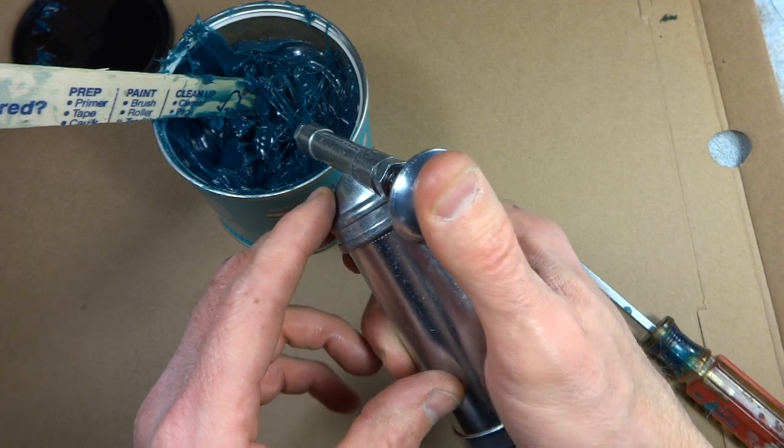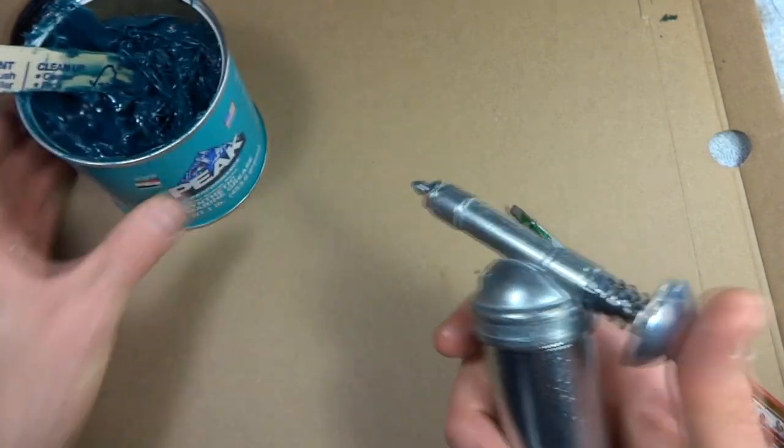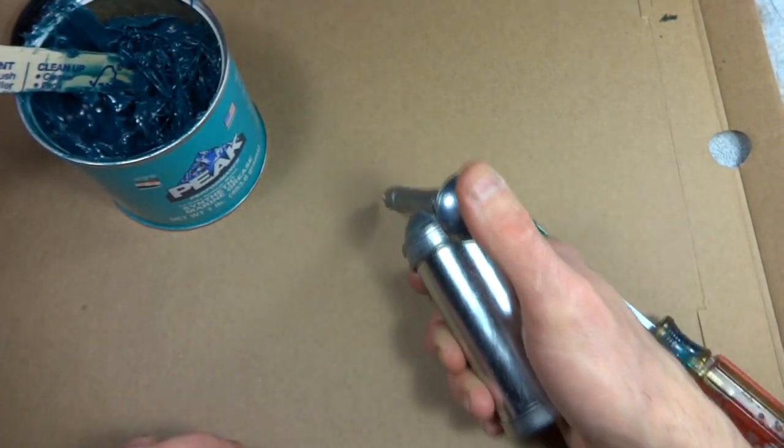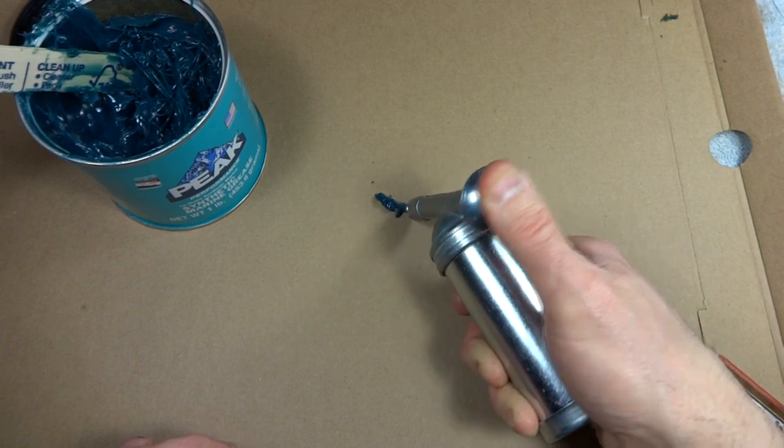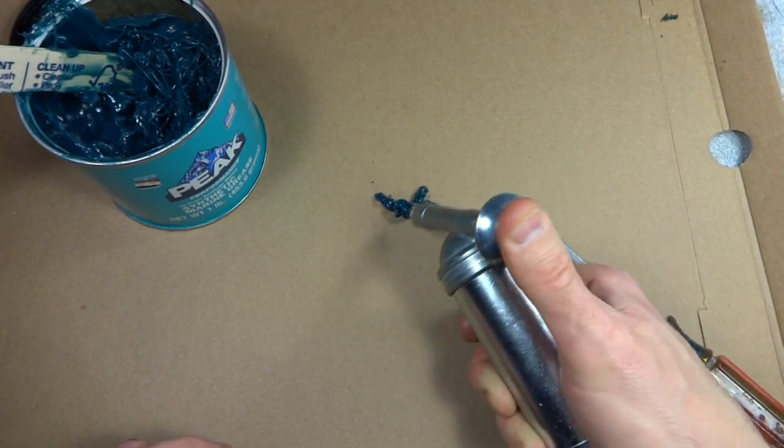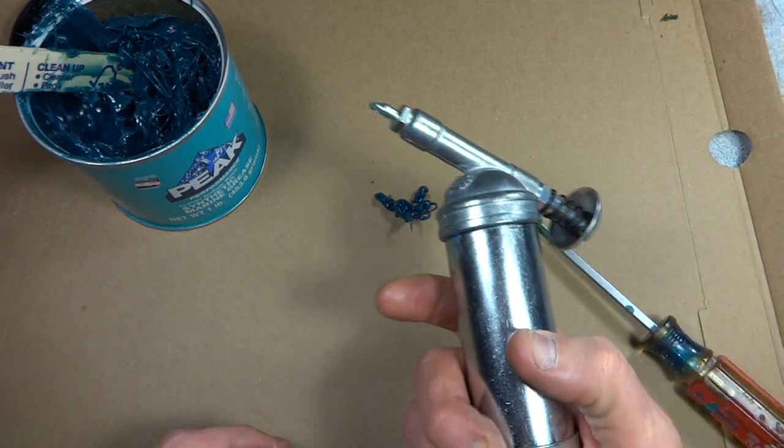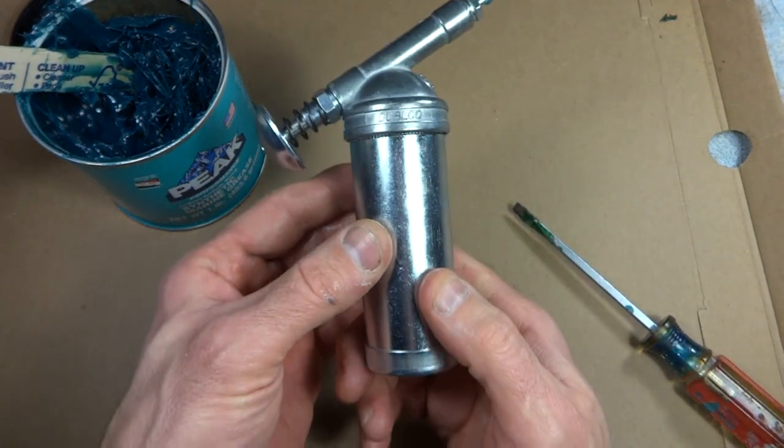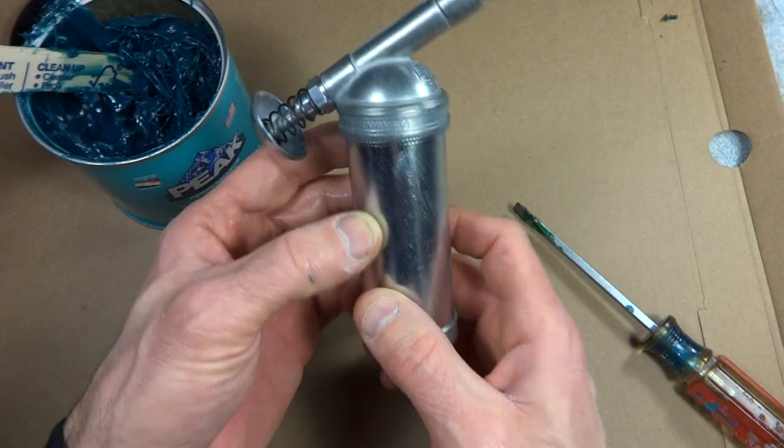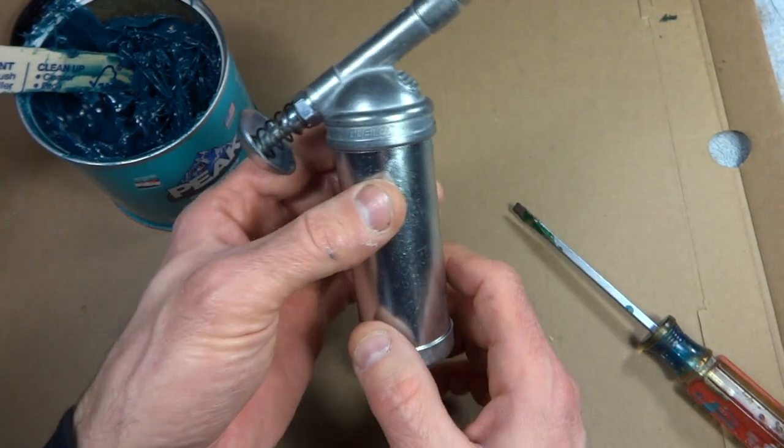So anyway, this I think will be real nice for greasing ball bearings. I can get just small amounts of grease in there, as opposed to using my fingers smearing it all around there. It's a neat little tool. I think I'm going to like it. And that's the Dual-Co Mini Grease Gun.